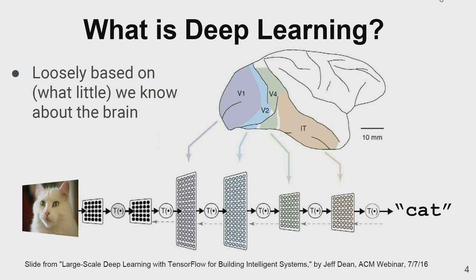Deep learning computations — you can squint and see they look like matrix multiplication with a little bit of garnish in between. Even convolutional neural networks look a lot like matrix multiplications. So maybe we can focus down and get a lot of advantage out of building a deep learning accelerator.